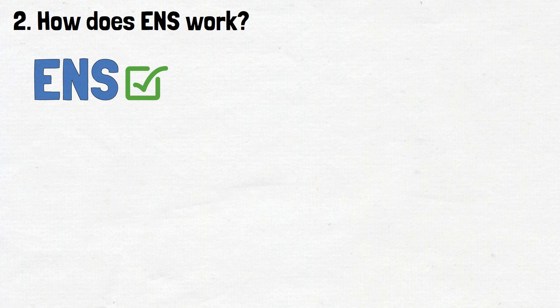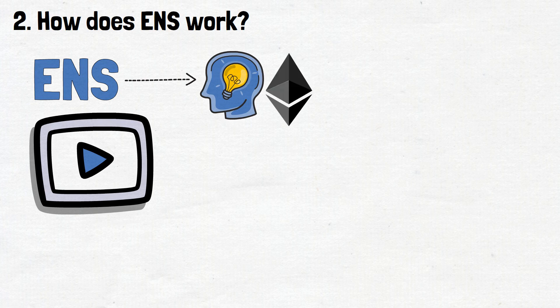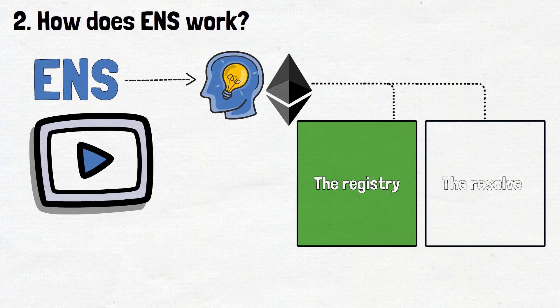As we now know what is ENS in crypto, it's time to explore how does ENS work. So, as I mentioned at the beginning of the video, ENS is a solution built on the Ethereum blockchain. In particular, it is built on two Ethereum-based smart contracts, the registry and the resolver.